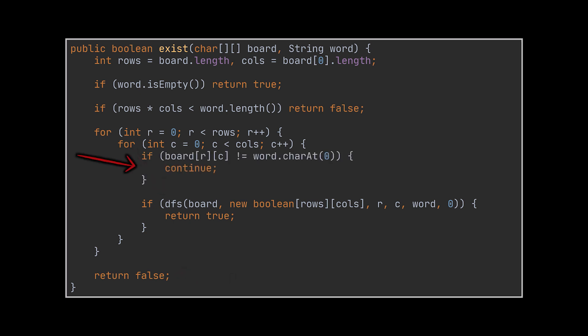One small optimization that can be done here is to check if the first letter of the given word matches the character stored in the cell we are currently traversing, because if they aren't then there is no need to even start our traversal logic.